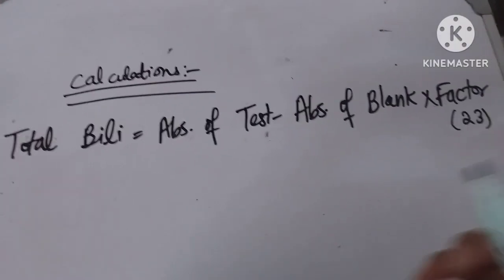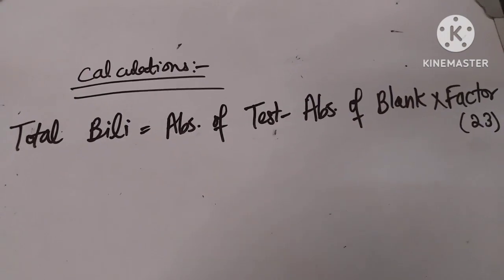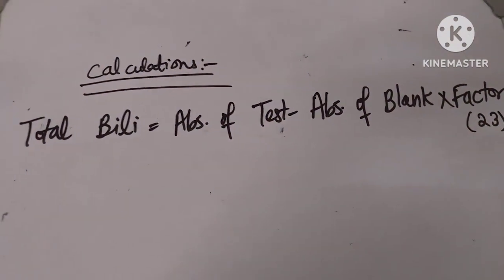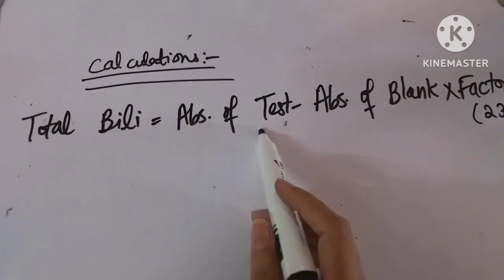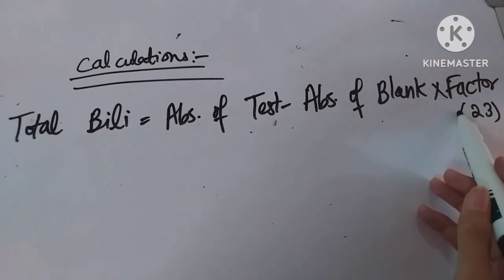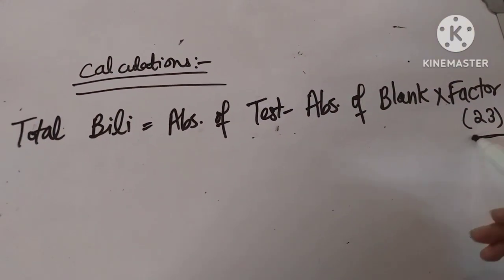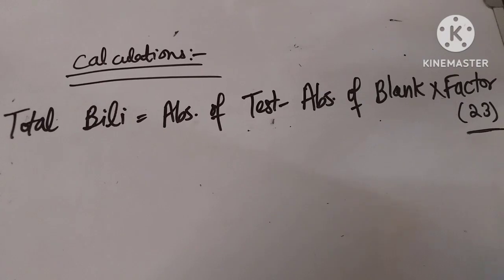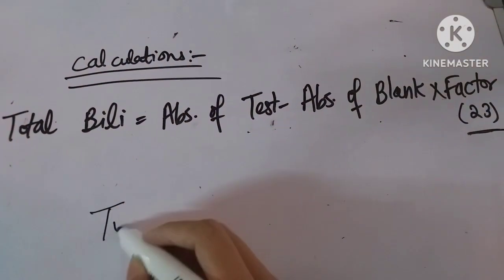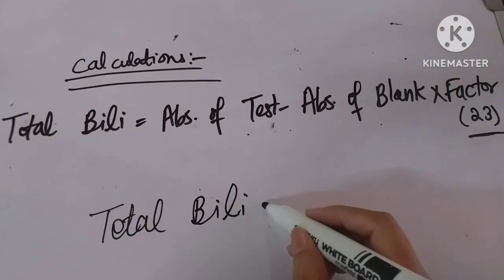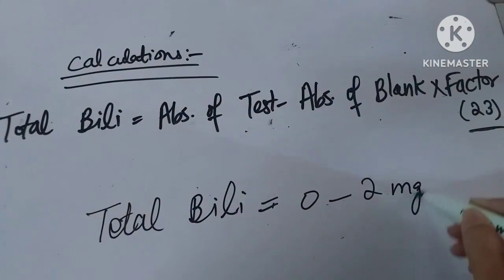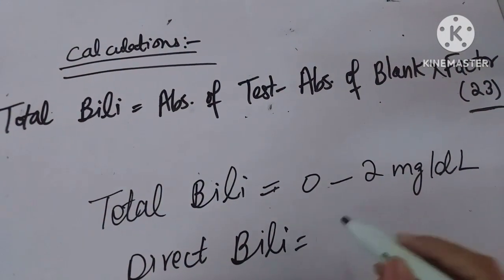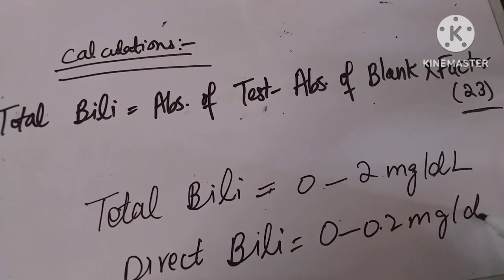For the calculations of total bilirubin, we can perform this test by manual method or on the Microlab 300, where calculations are automatically set in the machine. Total bilirubin equals (absorbance of test minus absorbance of blank) multiplied by the factor, which is 23 for total bilirubin. The machine calculates the value automatically. The normal range for total bilirubin is 0 to 2 mg/dL, and for direct bilirubin it is 0 to 0.2 mg/dL.